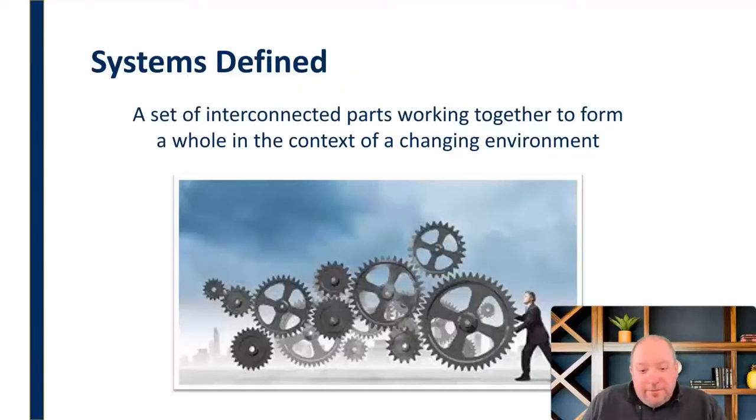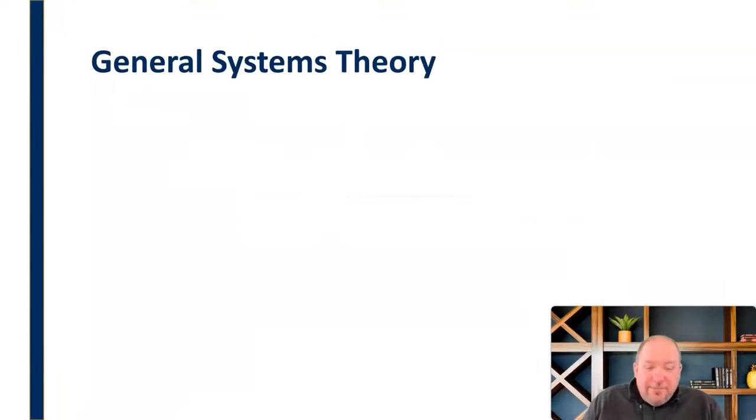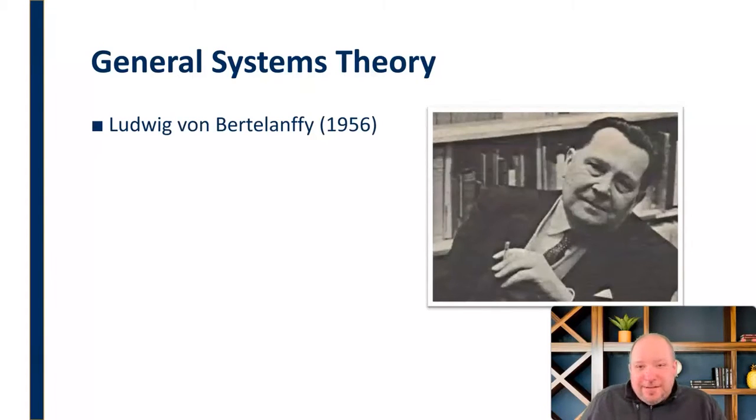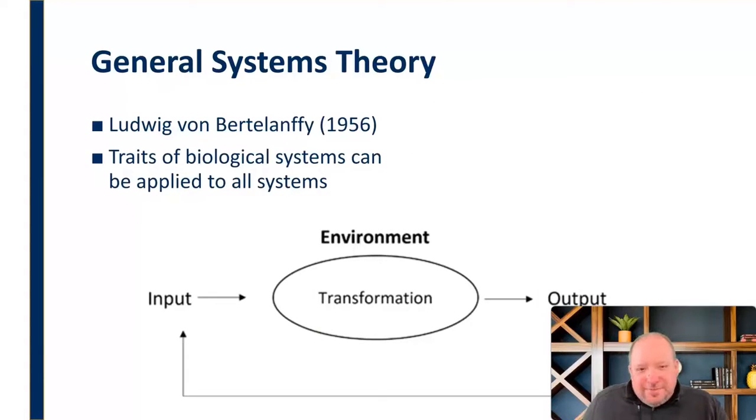The inception of modern systems theory came from the field of biology with the proposal of general systems theory in 1956. Ludwig von Bertalanffy, a Canadian biologist, suggested that the traits of biological systems, meaning input, transformation, and output, could be applied to any system.